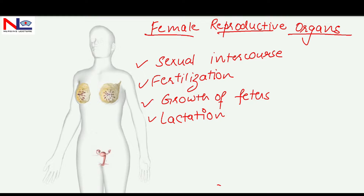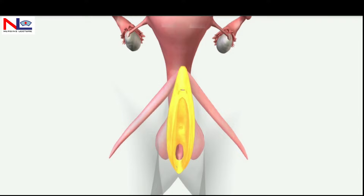Female reproductive organs are concerned with sexual intercourse, fertilization, growth and development of the fetus, and lactation after childbirth.